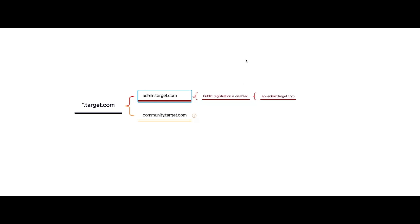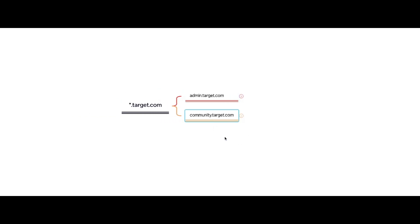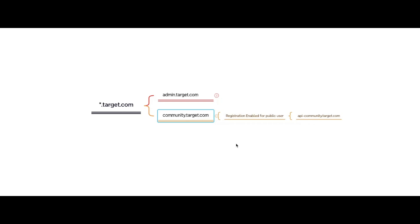The two subdomains are admin.target.com and community.target.com. Upon analyzing admin.target.com, you notice that public registration is not allowed. Through JavaScript enumeration and reconnaissance, you find that API requests are handled by api-admin.target.com once logged in. Since public registration is disabled, you can't access it without a valid JWT token in the authorization header. Meanwhile, community.target.com allows any user to register and interact with community members.